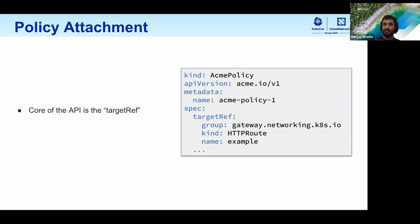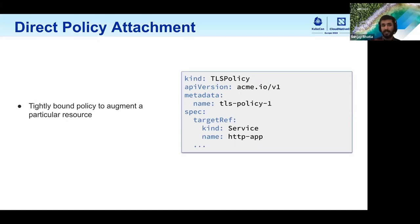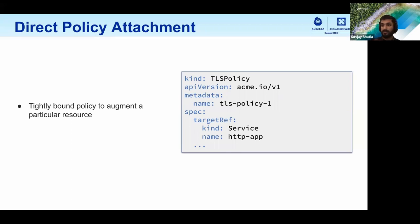There are two types of policy attachment. The first is direct policy attachment, for when you want to augment a particular individual resource. In this example, we have a TLS policy targeting a service. We may want to apply configuration that a proxy or ingress controller implementation uses to configure TLS connection details between the proxy and a backend service. Instead of changing the service resource itself, we add a meta resource — a policy targeting the service — for implementation-specific configuration on top of what service gives us.